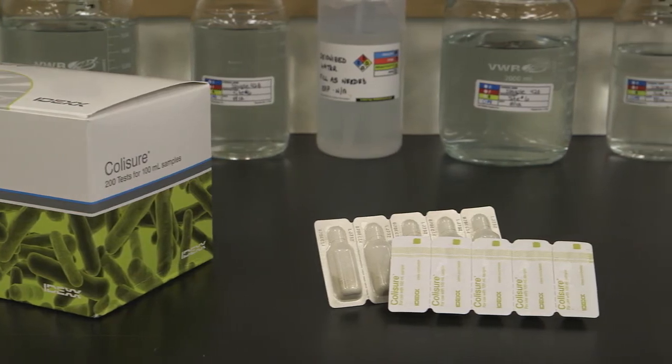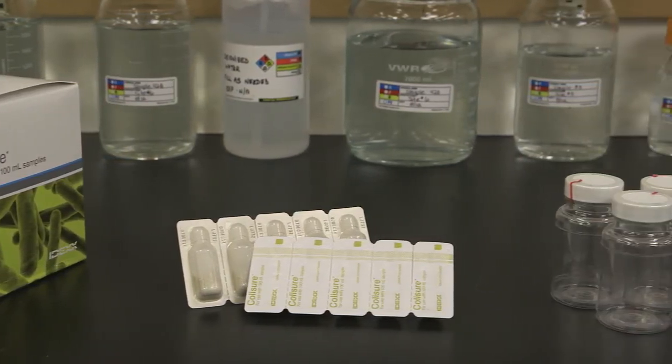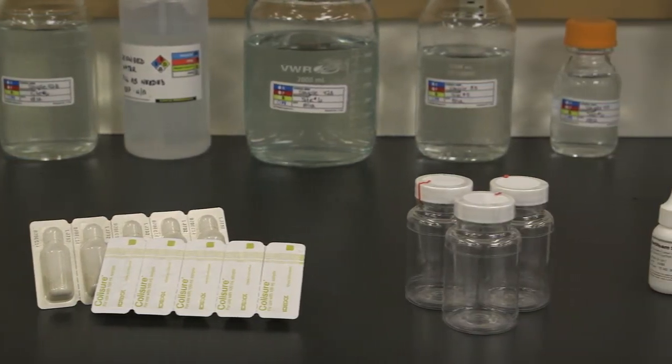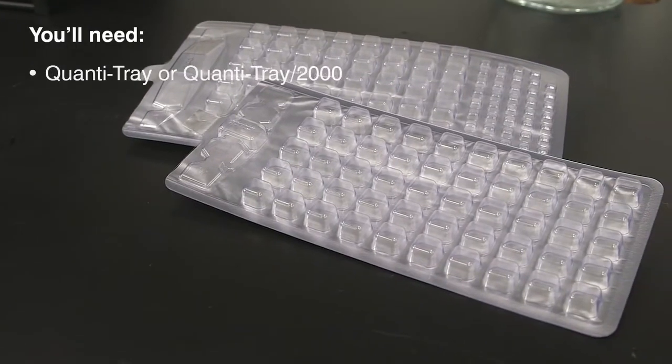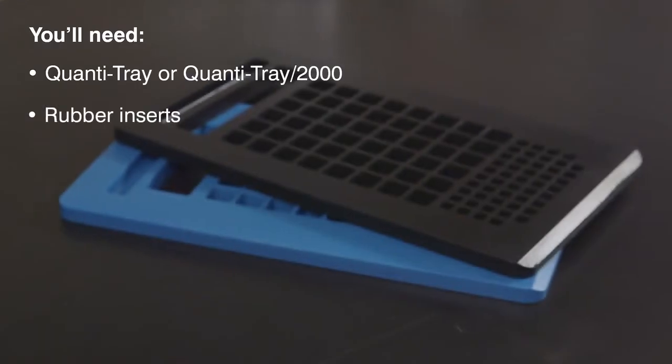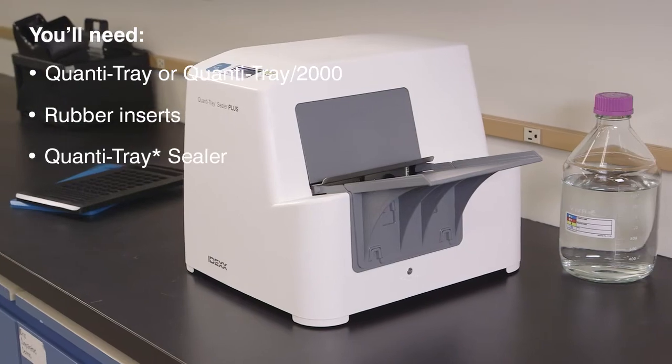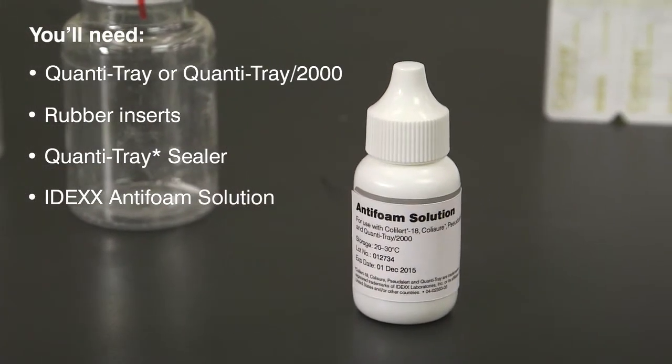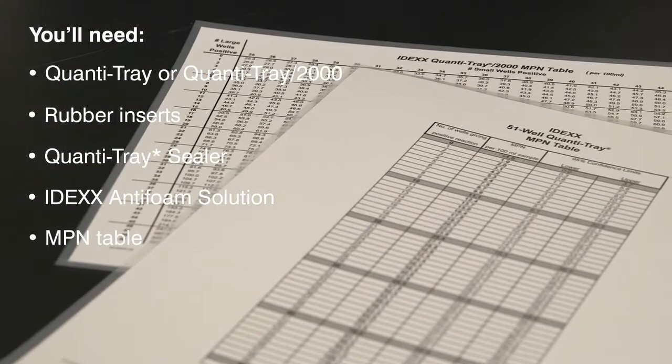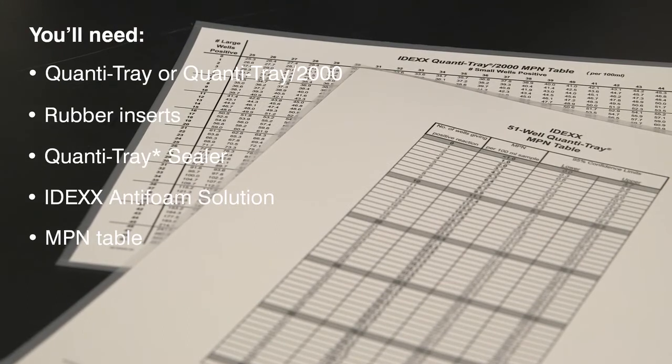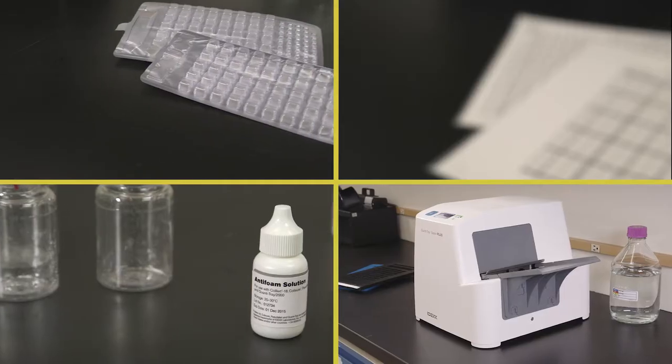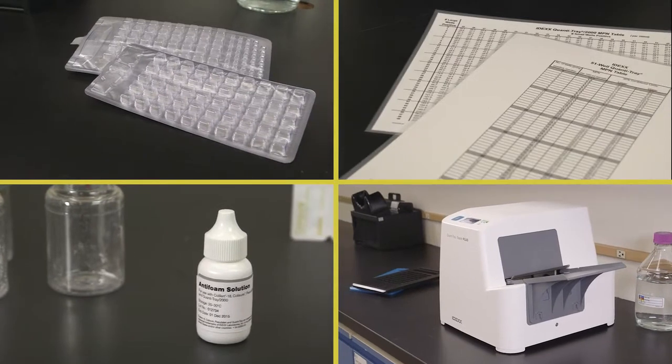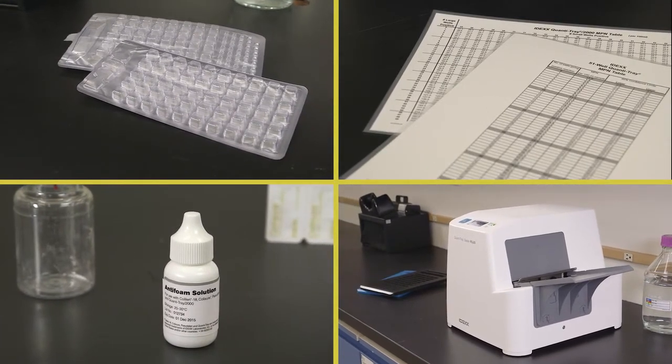In addition to the materials used for presence-absence detection, for quantification, you will need a QuantaTray or QuantaTray 2000, QuantaTray rubber inserts, a QuantaTray sealer, IDEXX anti-foam solution, and the included most probable number table or the IDEXX automated MPN generator program found at IDEXX.com. All of these items are included in the QuantaTray system and are available from IDEXX.